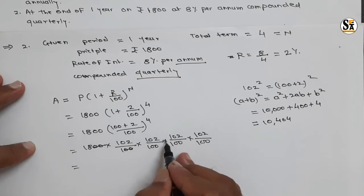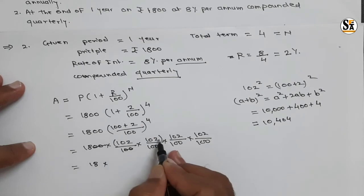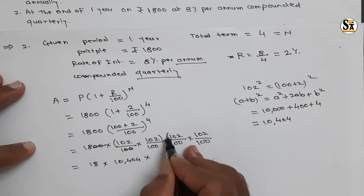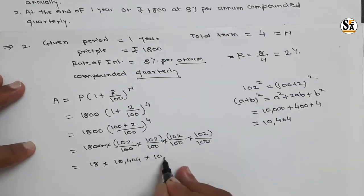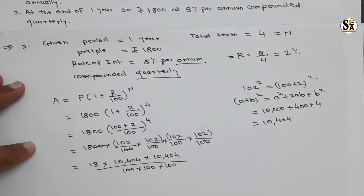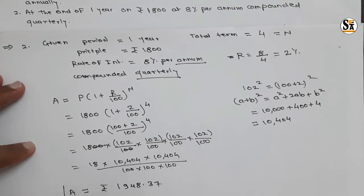We need this squared again, so 10,404 × 10,404. So we have: 18 × 10,404 × 10,404 divided by 100 × 100. Taking the multiplication and solving, we get the total amount rupees 1,948.37. This is the total amount to be paid.